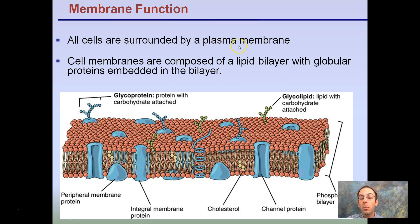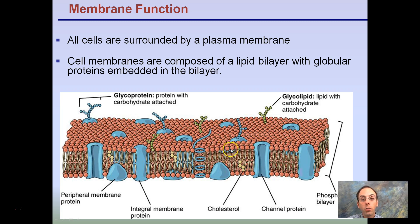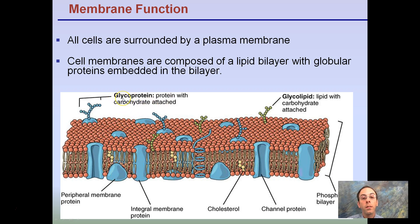Membrane function: all cells are surrounded by a plasma membrane. Cell membranes are composed of a lipid bilayer with globular proteins embedded in that bilayer. Here we have our phospholipid bilayer with our heads and tails. The lipid-based tails and the phospho-based polar heads create this bilayer. In here we have our integral proteins — they could be channel proteins — and peripheral proteins that just exist on the outside. Glycoproteins are proteins with a carbohydrate attached — think glyco, think glucose. A glycolipid is a lipid with a carbohydrate attached. These are important for recognition and allowing things to pass through.